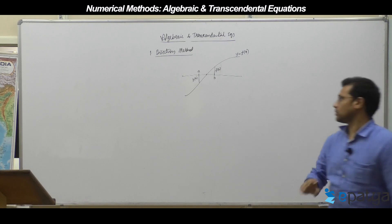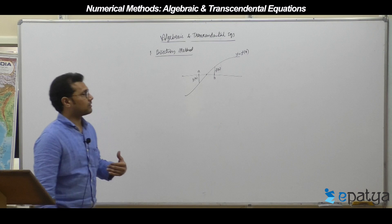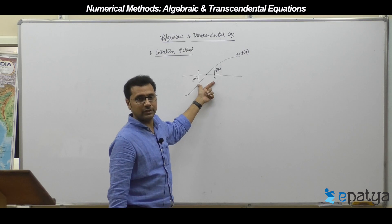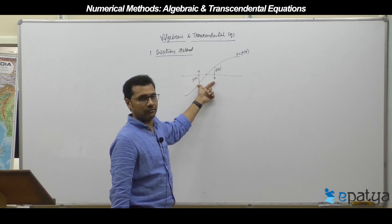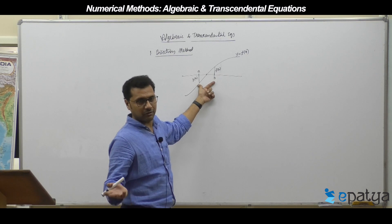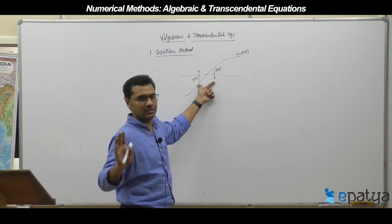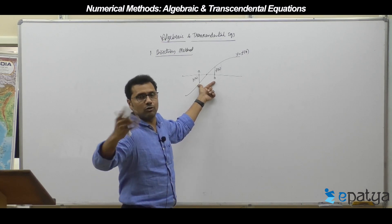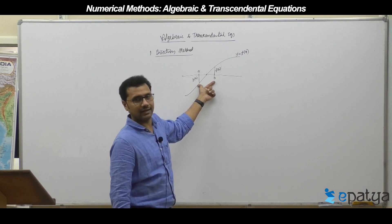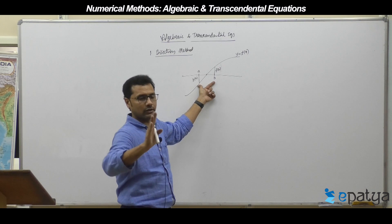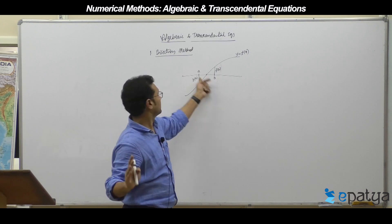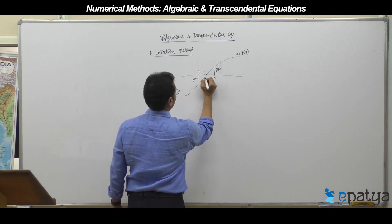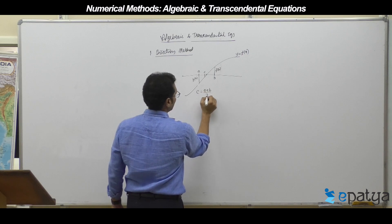So, by using trial and error for a given function f of x, I will find what a and b are — between which there is a root — such that f of a and f of b are of opposite sign. When f of a and f of b are of opposite sign, there always exists at least one root between x equal to a and x equal to b. We let that root be the midpoint: c equals a plus b divided by 2. This is the bisection — bisecting the line joining those two points.